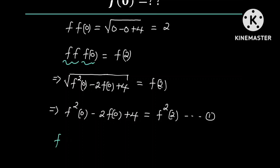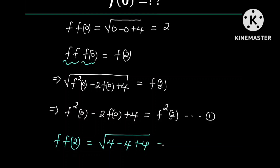Also, f of f of f of 2 is equal to f of f of 2, which equals f of f of 0 plus 4, and this is equal to 2.